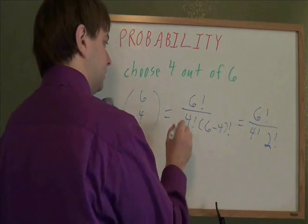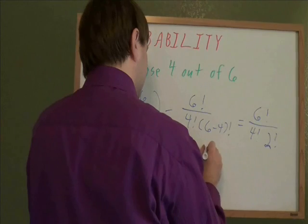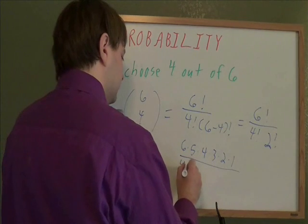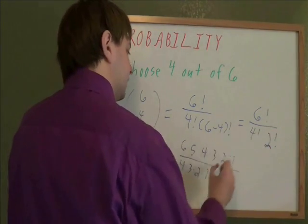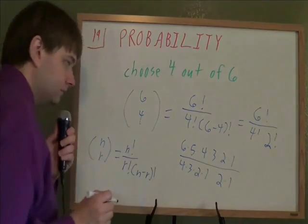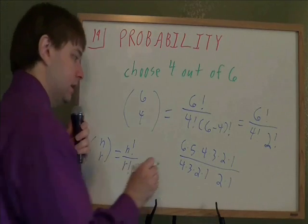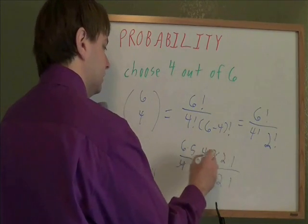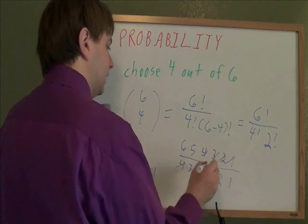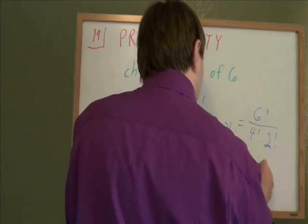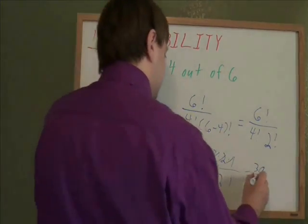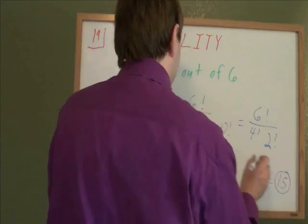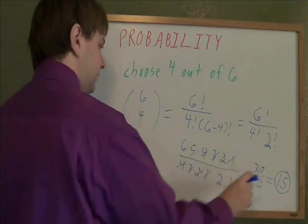And next, let's just write each of those factorials out. 6 factorial is 6 times 5 times 4 times 3 times 2 times 1. 4 factorial is 4 times 3 times 2 times 1. 2 factorial is 2 times 1. And usually a lot will cancel on these problems. And if you've got 4 on top, 4 on bottom, they cancel. 3 on top, 3 on bottom cancels. 2 on top, 2 on bottom cancels. Those ones cancel. And we really just have 6 times 5, which is 30, over 2 times 1, which is 2. 30 divided by 2 gives you your final answer, 15. If you're choosing 4 people out of 6 people, there are 15 ways to choose those people.